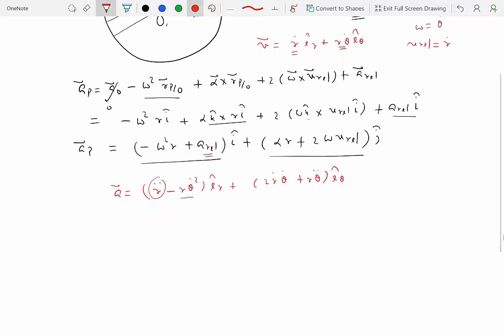R theta dot squared is same as R omega squared. 2 R dot theta dot is same as 2 omega V relative and R theta double dot is same as alpha R.